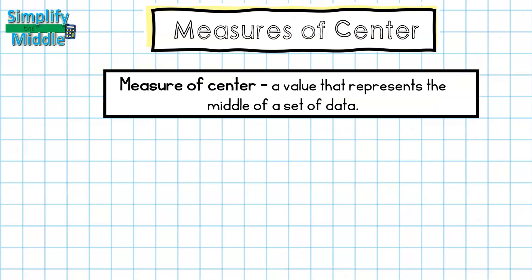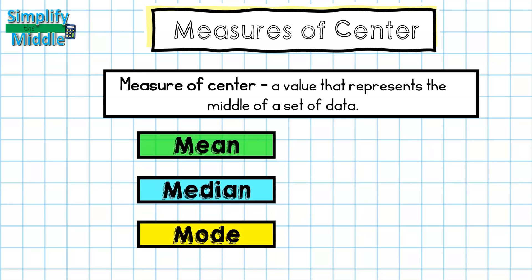Let's recap. We know a measure of center is just a value that represents the middle of a data set. We know our three measures of center are mean, median, and mode.